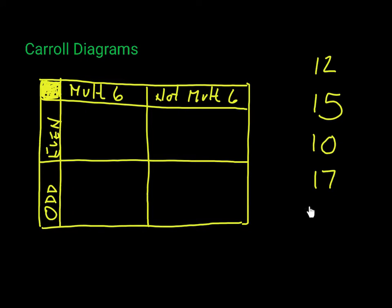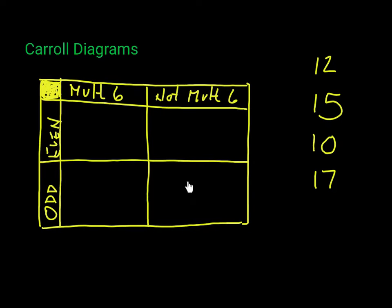I've given you a set of numbers here. The idea is you take a number — say 12 — and decide which of these four boxes it goes into. For example, if you put 12 in a particular box, you have to make sure it satisfies both criteria: for instance, that it is both not a multiple of six and is an odd number. You have two criteria to satisfy.